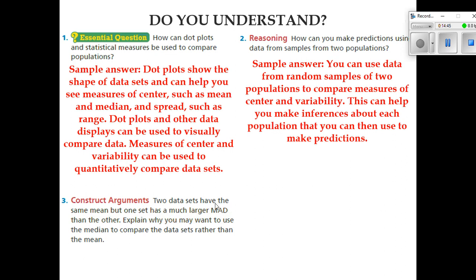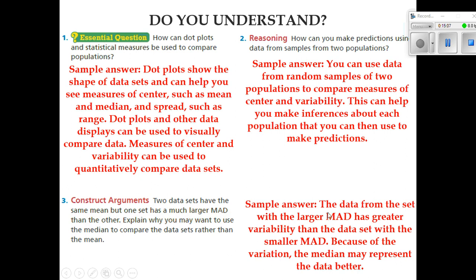Lastly, two data sets have the same means but one set has a much larger measure of absolute deviation than the other. Explain why you may want to use the median to compare the data sets rather than the means. When we talked about the data, the set with the larger measure of absolute deviation has greater variability than the data set with the smaller MAD. Because of the variation, the median may represent the data better. Remember we have that example where we have that big outlier data. And the more spread that the data is, the more uncertain we are of what the middle range is going to be that would properly represent that. So sometimes finding the median is better than using the means.